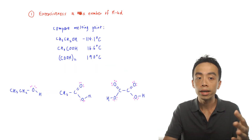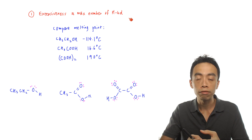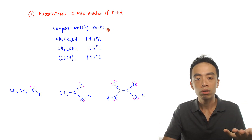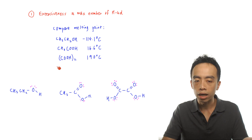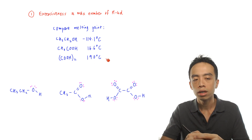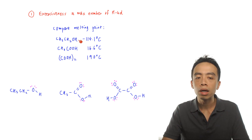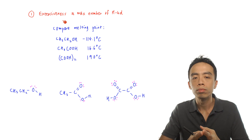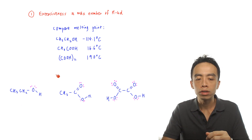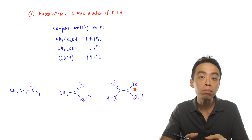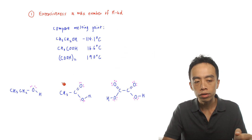Let's look at the first factor, extensiveness of the hydrogen bond, which is related to the maximum number of hydrogen bonds each molecule can form with its neighbor. Comparing melting point trends: ethanol has a melting point of minus 114.1 degrees Celsius, ethanoic acid has a melting point of 16.6 degrees Celsius, and ethanedioic acid has a melting point of 190 degrees Celsius. These three compounds each contain two carbons but have different numbers of OH and C=O groups, and there is an increase in the melting point. We draw each molecule and consider the maximum number of hydrogen bonds each can form.